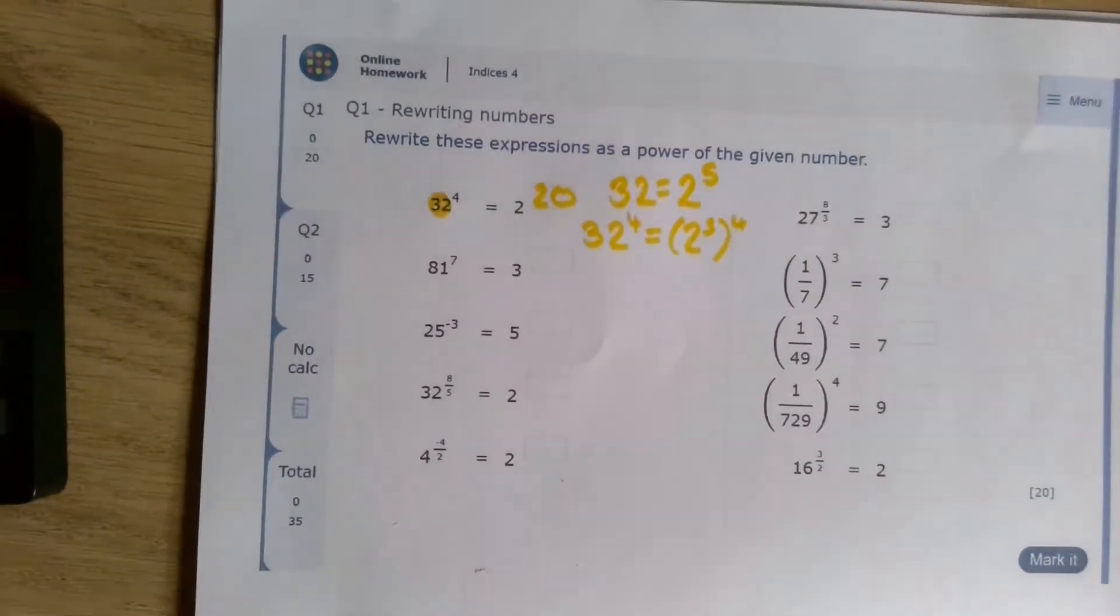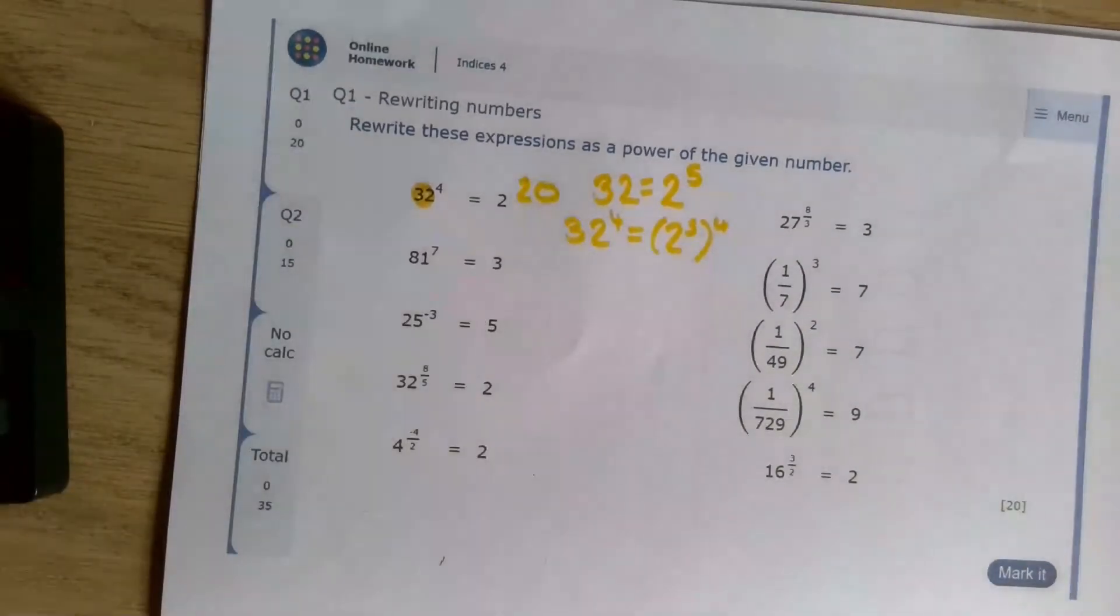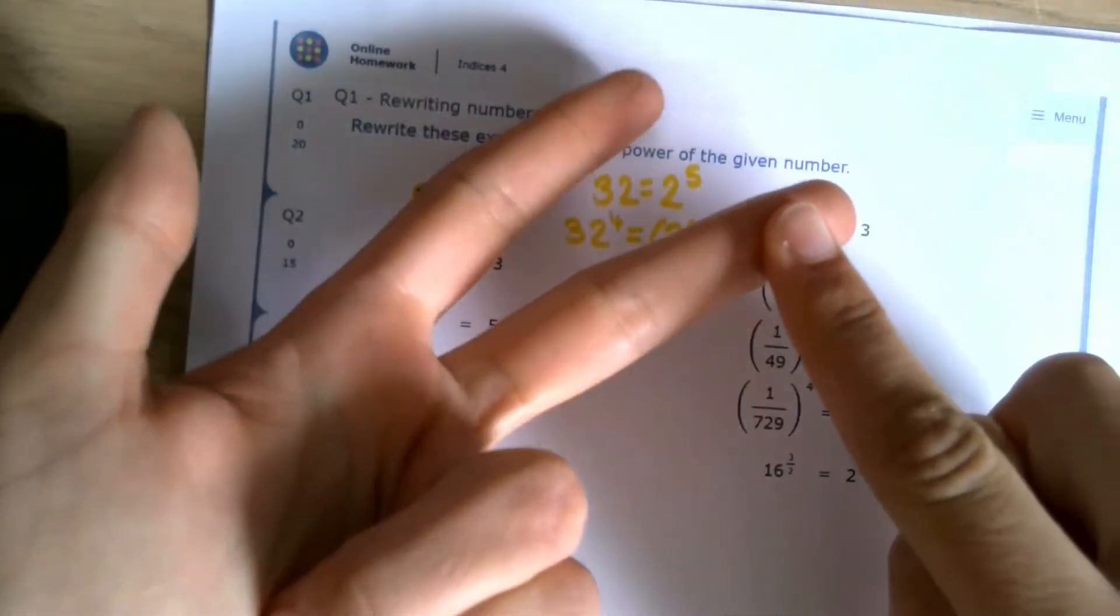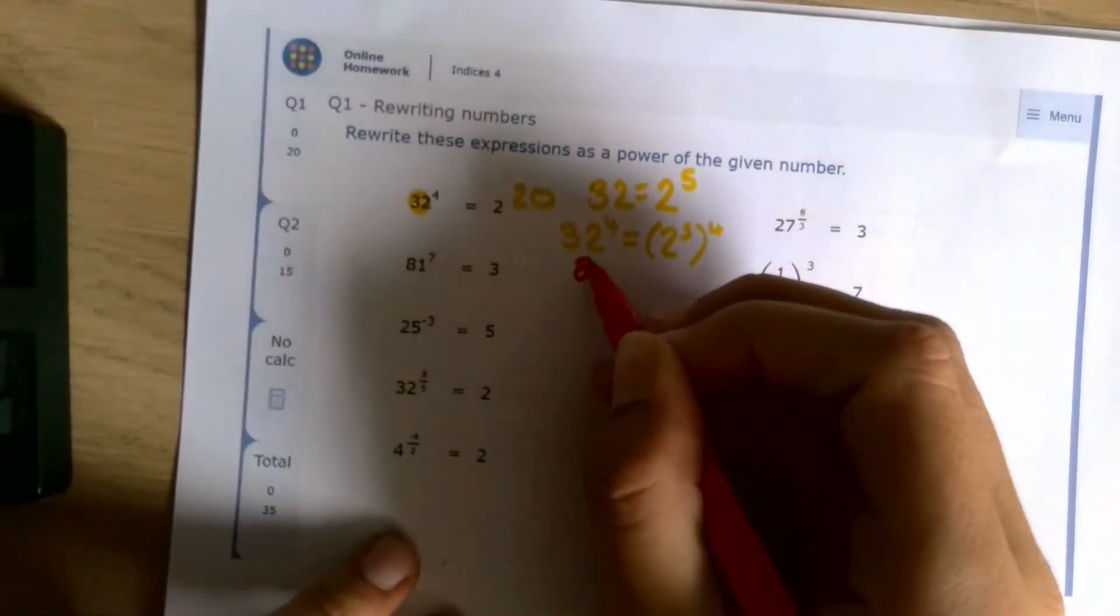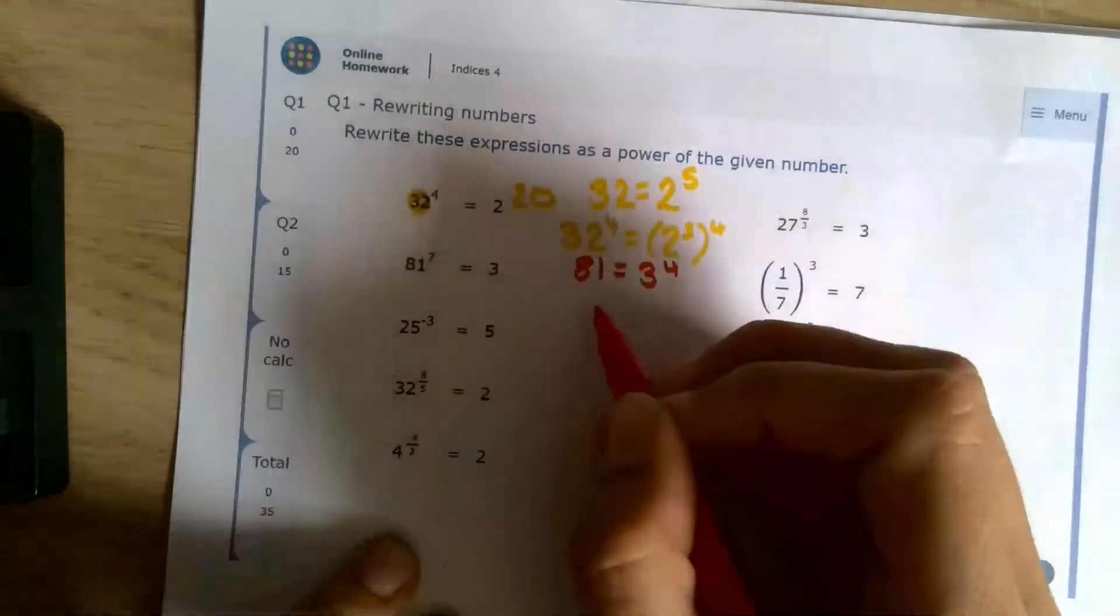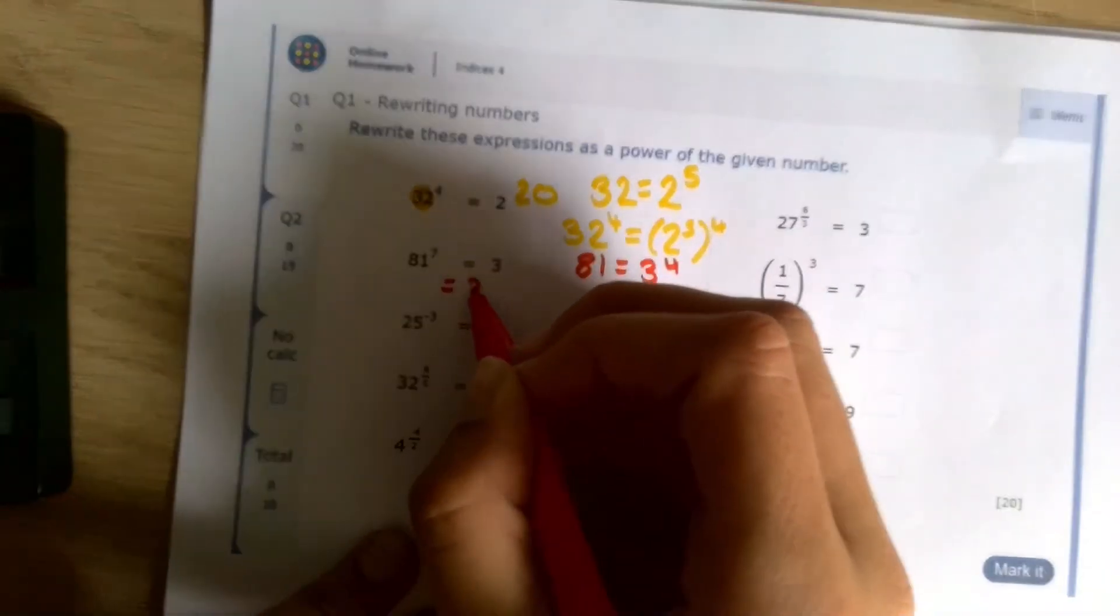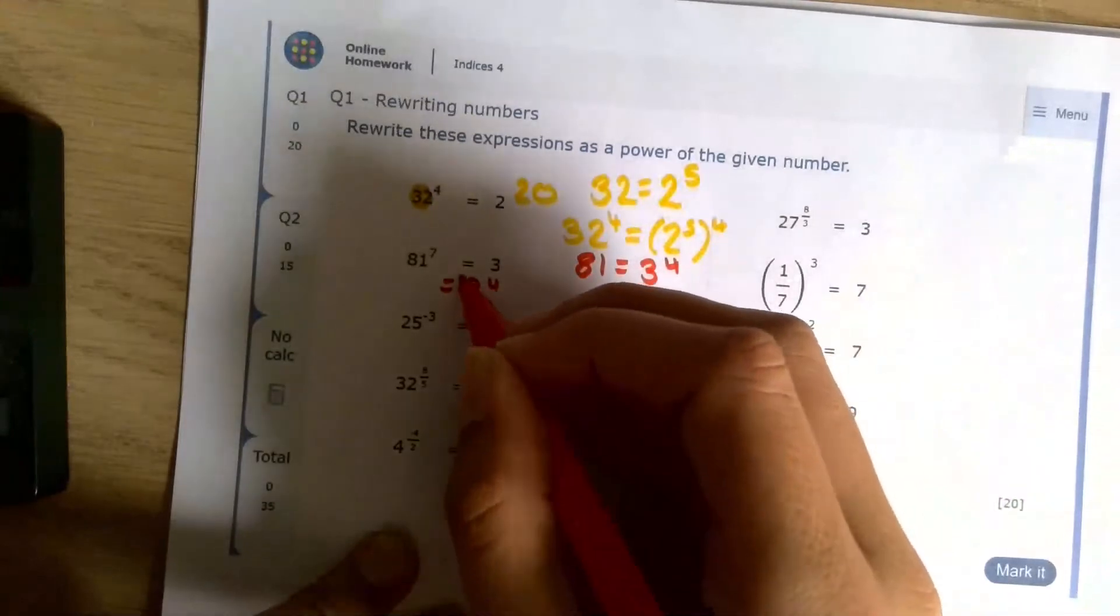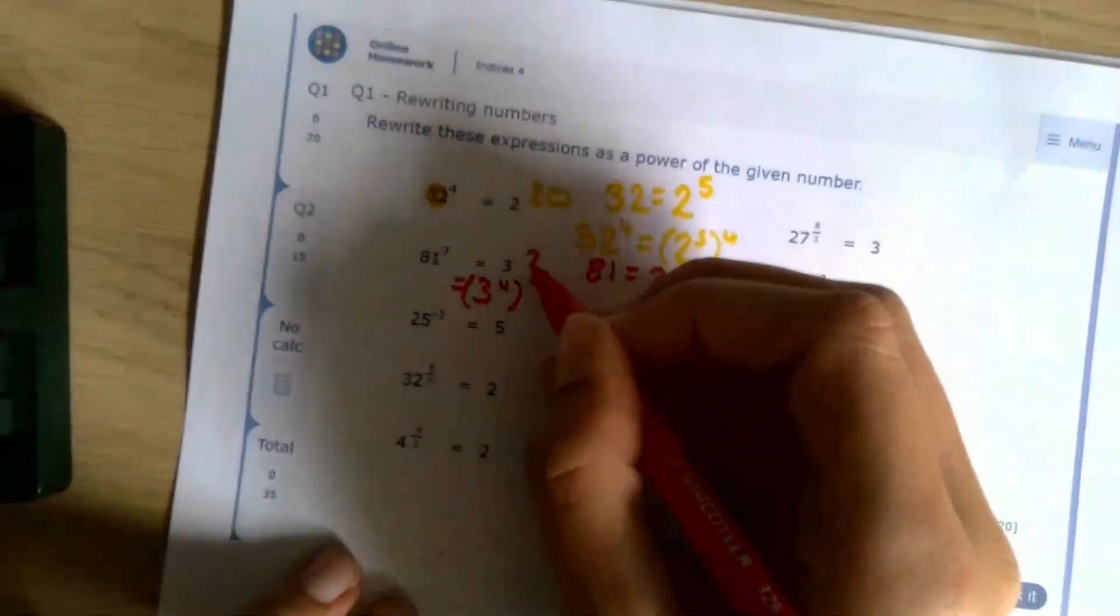Same thing here. We assume, because it's got a 3 there, that 81 is 3 to the power of something. So 3, 9, 27. The next one is indeed 81. So 81 is 3 to the power of 4. So we're looking at 3 to the power of 4 to the power of 7. We multiply the powers, 28.